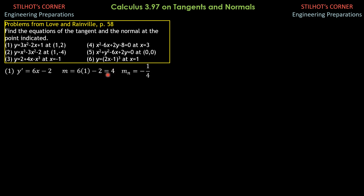Since the slope is 4, the sign between the x and y terms would be minus. So the equation of the tangent would be 4x minus y, where 4 is 4 over 1 as the coefficient. So 4x minus y equals 4x1 minus y1, where x1 is 1 and y1 is 2. For the tangent: 4x minus y equals 4 times 1 minus 2.